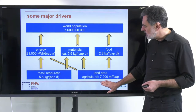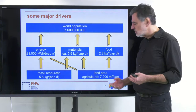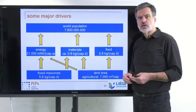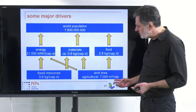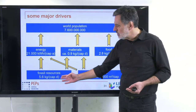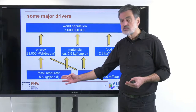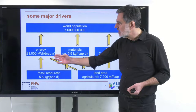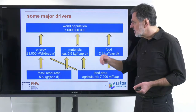The land area basis is roughly 7,000 square meters per capita — per person. So I take the overall agricultural land area and divide that by global population to get the average value on a global scale. For fossil resources, we are using 5.6 kilograms per person per day — almost 6 kilograms — producing on global average 21,000 kilowatt-hours per capita per year.